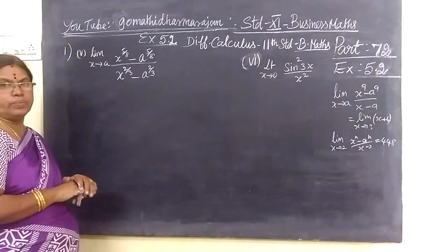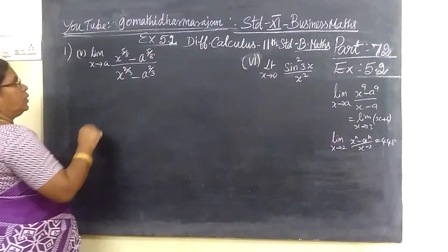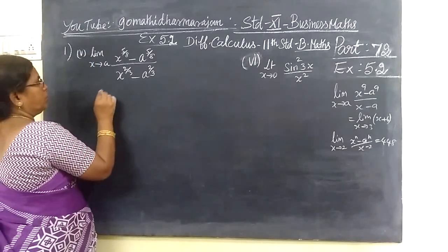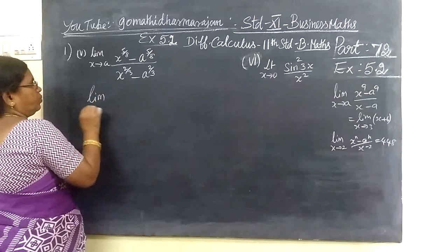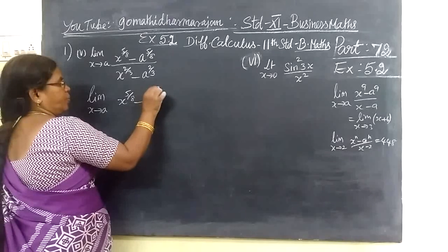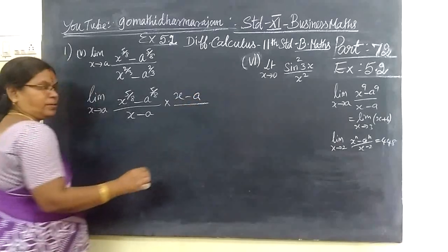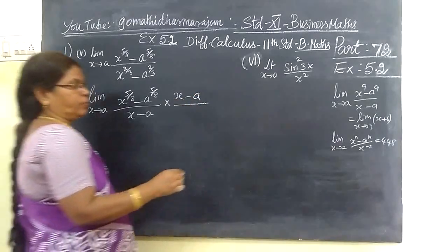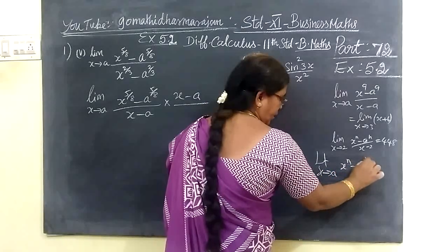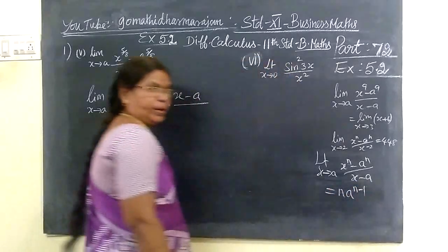Coming to the next class 5.2, question number 1. You are given the limit: x tends to a, x power 5 by 8 minus a power 5 by 8, divided by x minus a. We know the formula: x power n minus a power n, divided by x minus a, equals n into a power n minus 1.